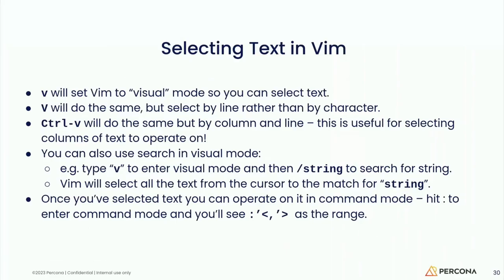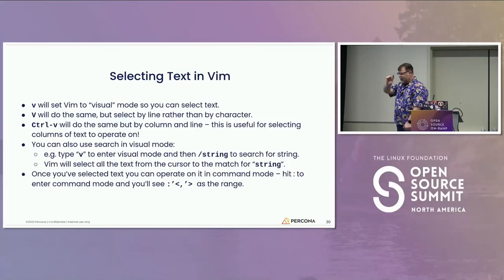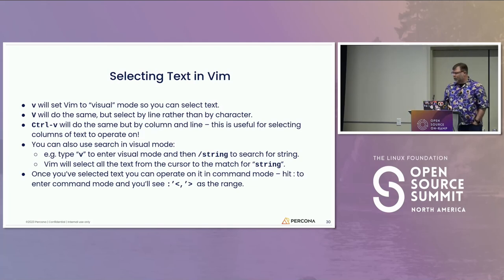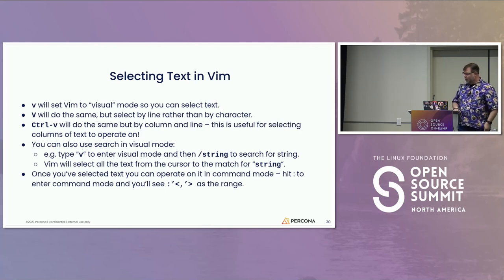Selecting text in VIM is really cool. V puts you in visual mode to select cursor by cursor. Capital V does the same thing but by lines — if you want to select lines of text, capital V will do that. Control V lets you select whole columns of text. For example, if you have a file with five blank spaces at the front of each line, Control V and trim them right out. It's also useful for cutting out one column from structured text.